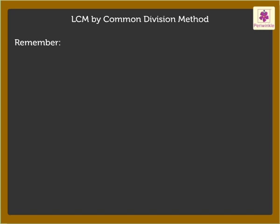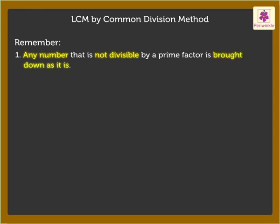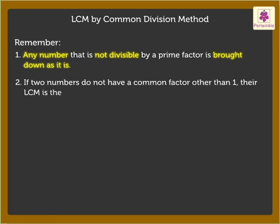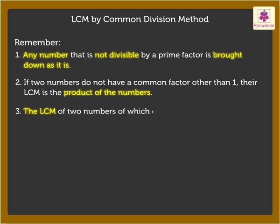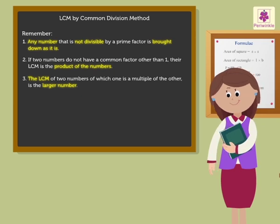Remember these key points: 1. Any number that is not divisible by a prime factor is brought down as it is. 2. If two numbers do not have a common factor other than 1, their LCM is the product of the numbers. 3. The LCM of two numbers, of which one is a multiple of the other, is the larger number. Now try some examples and find the LCM by the common division method on your own.